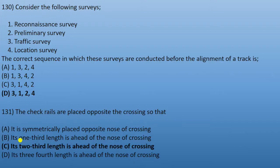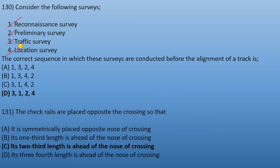Next: consider the following surveys — reconnaissance survey, preliminary survey, traffic survey, and location survey. The correct sequence for railway track alignment is: first, traffic survey; then preliminary survey; then location survey. This is the correct order of surveys used for track alignment.